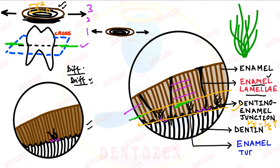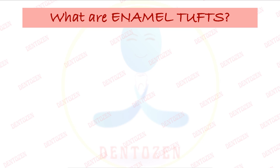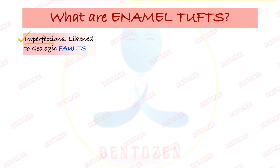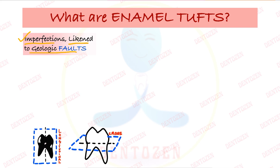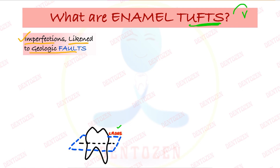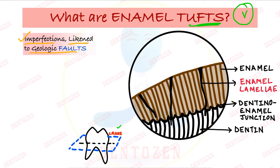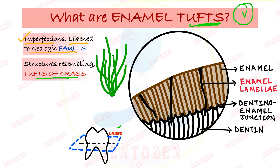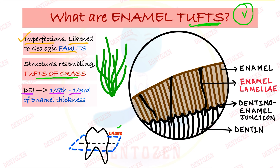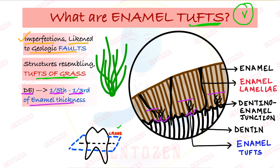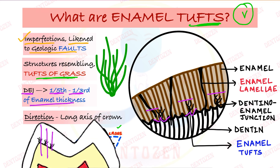Now we've understood what they are and how they are formed. Let's see how to write for your exam. First, introduce the topic: enamel tufts are imperfections likened to geologic faults, seen in ground sections. They are seen abundantly in the cross section and rarely in the longitudinal section. Why are we calling them enamel tufts? Because in the microscope when we see this section, they look like structures that resemble tufts of grass. Second, they extend from the dentino-enamel junction to one-fifth to one-third of enamel thickness, and their direction is along the long axis of the tooth.